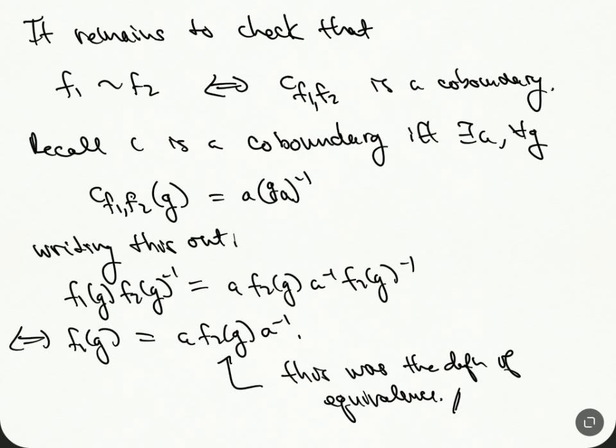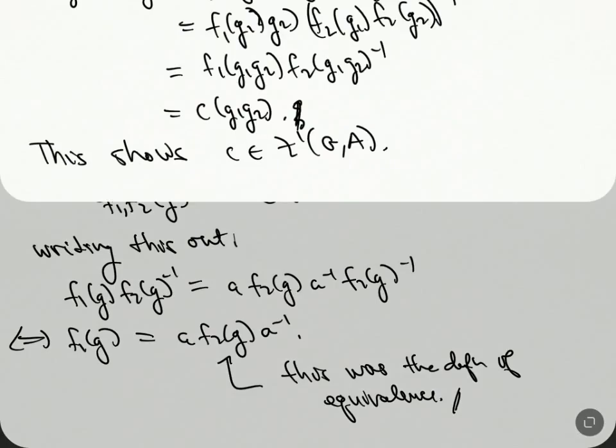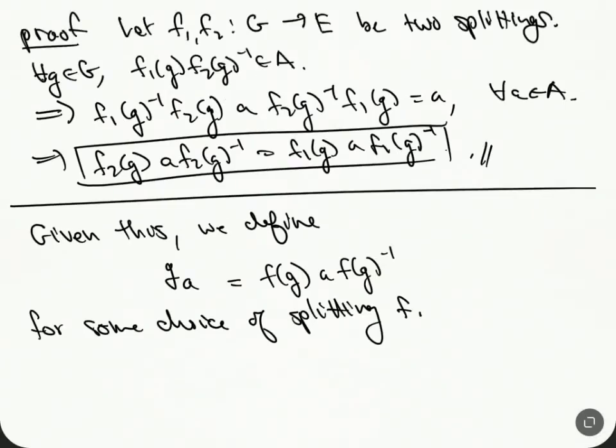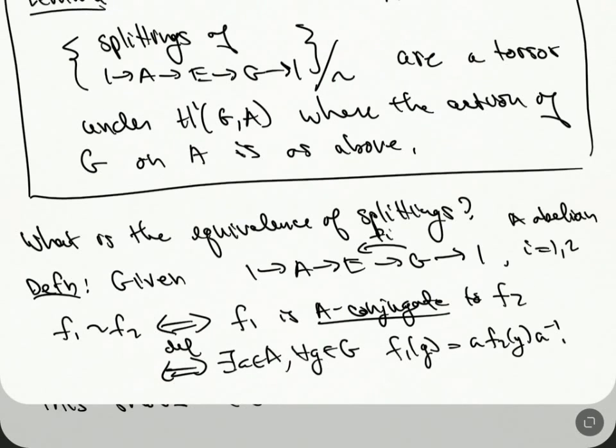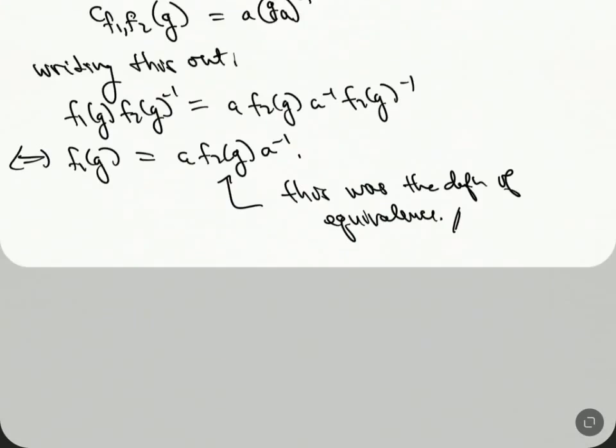That's all I wanted to say. So we've proved, let me just repeat that. We've proved here that the splittings of this are really a torsor under this cohomology. All right. Let me just repeat that. Thank you.